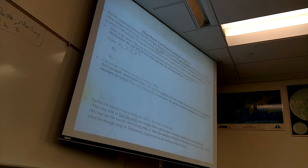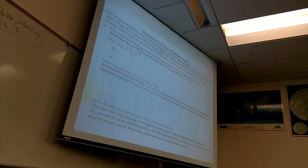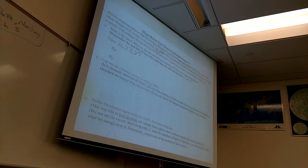So which one is that going to be — the null or the alternate? The alternate. Why? There's no equal sign. If Phil would have said he thinks they live at least as long, it would have been 'greater than or equal to,' which would have been the H0, because it has an equal sign in it.